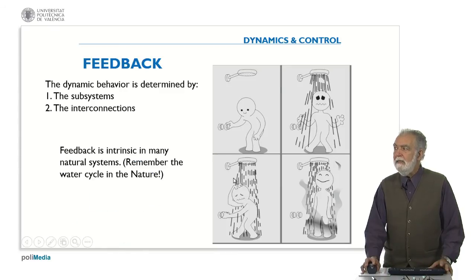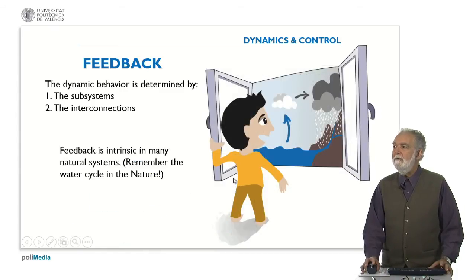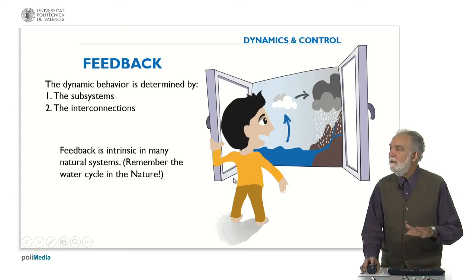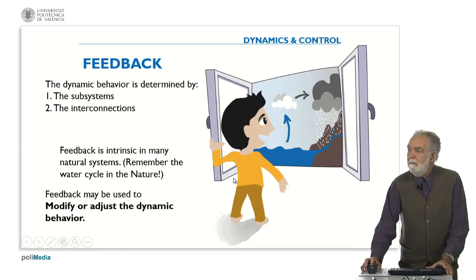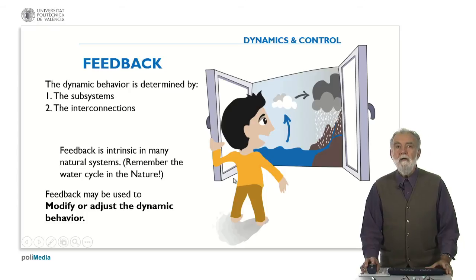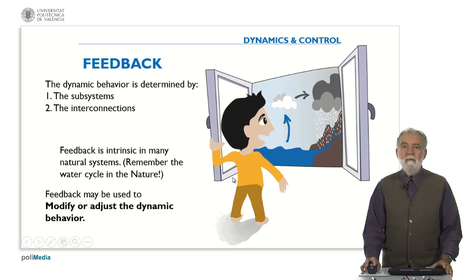So feedback is intrinsic in many natural systems. Remember the water cycle that we saw in nature. And there is a feedback between, if there is a lot of water in the river, there is a lot of water in the clouds, then it's making a kind of circle or feedback. And feedback may be used to modify or adjust the dynamic behavior.